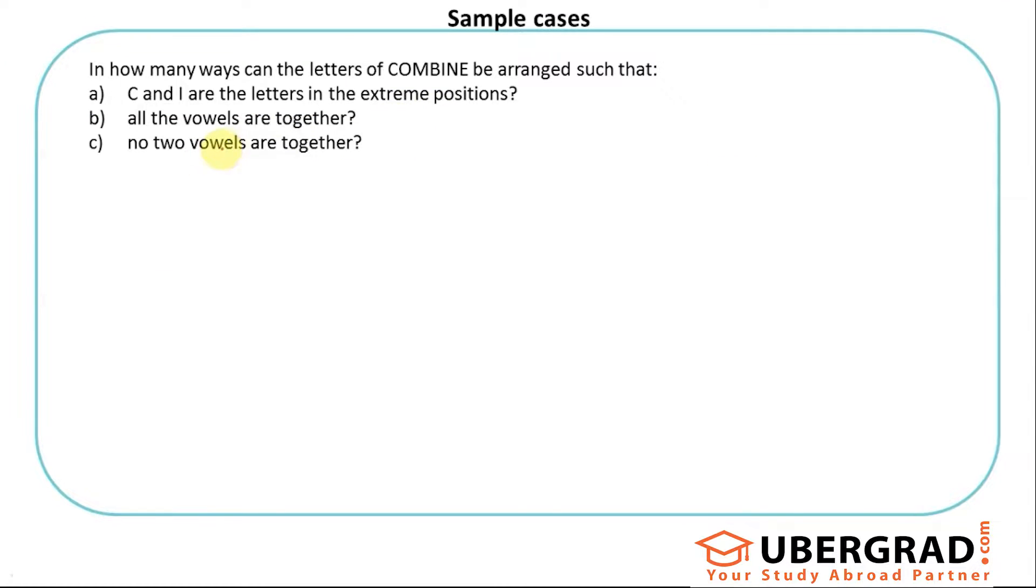Let's look at this question where you have an additional complexity added to it. In how many ways can the letters of COMBINE be arranged such that C and I are the letters in the extreme position.